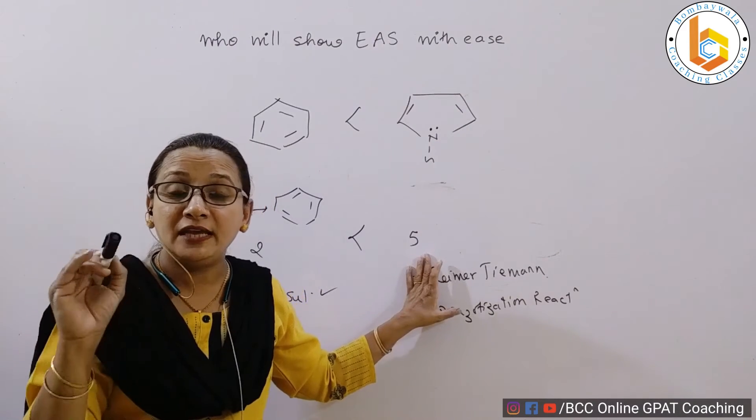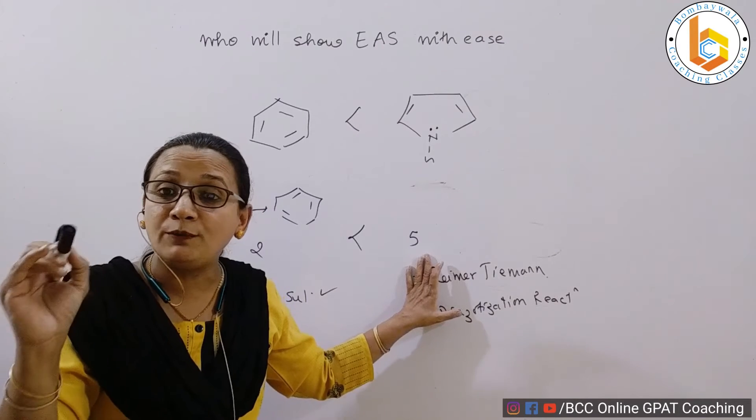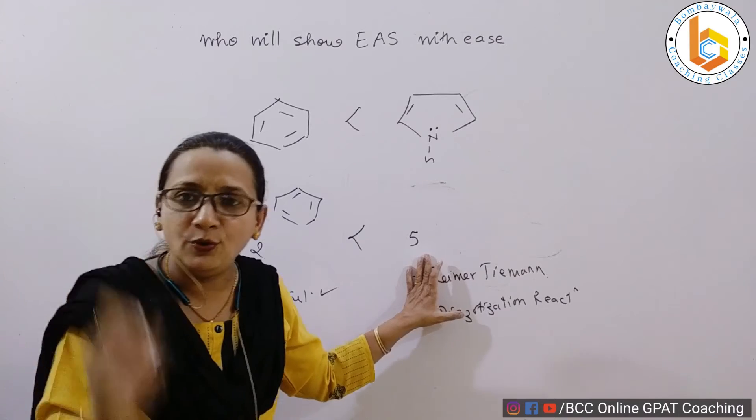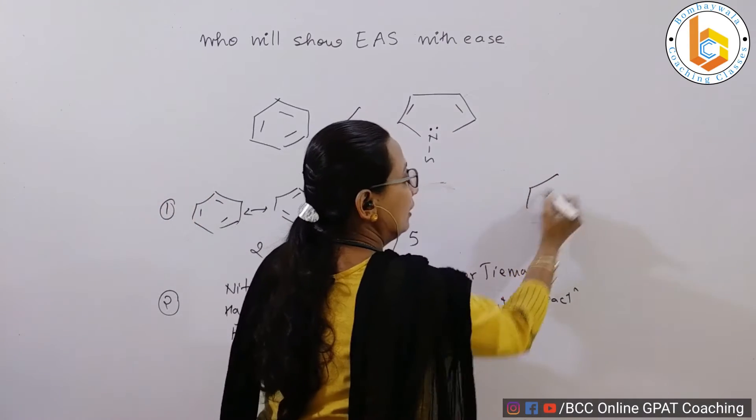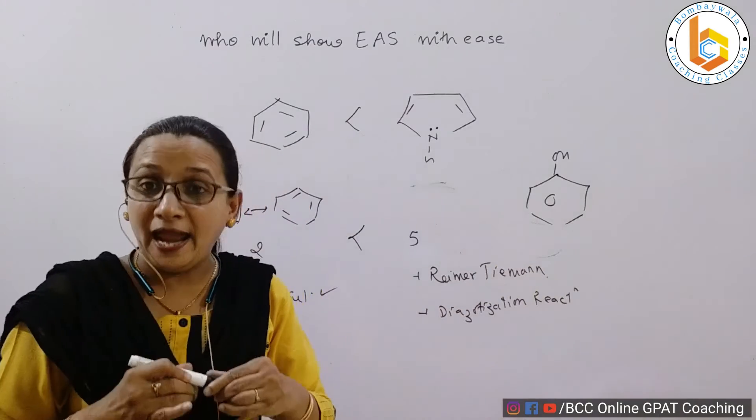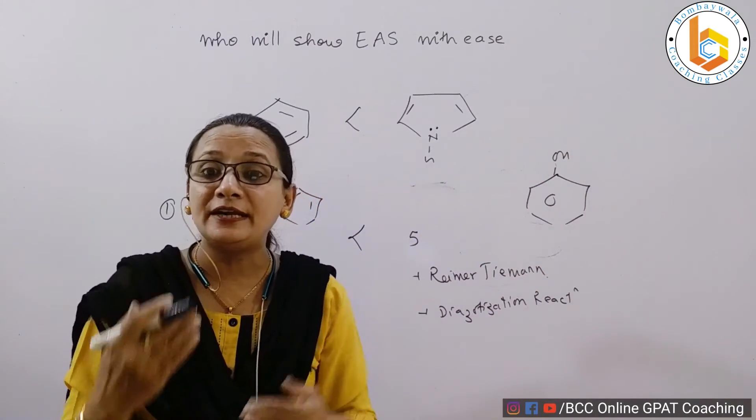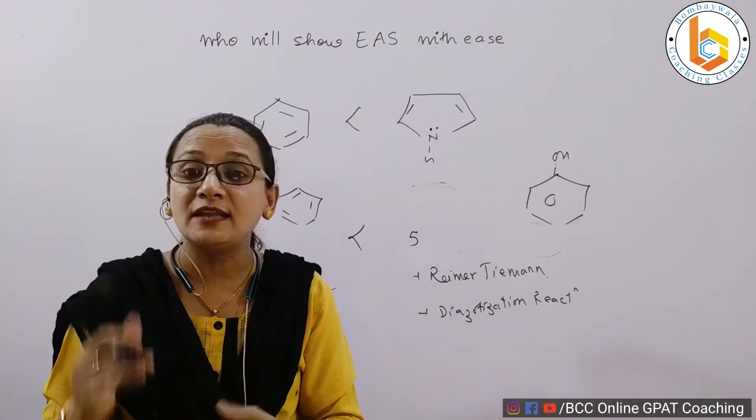Benzene can show only these but pyrrole can show all these five plus it can show Reimer-Tiemann and diazotization, which are the classic examples or the characteristic reactions which are shown by phenol. And we know already that phenol is containing a hydroxyl group, and this hydroxyl group makes benzene more reactive because OH is an activator.